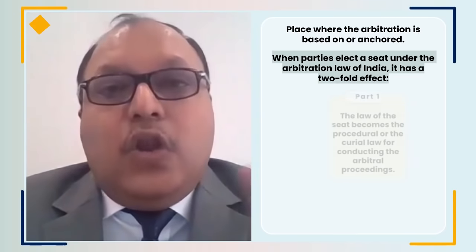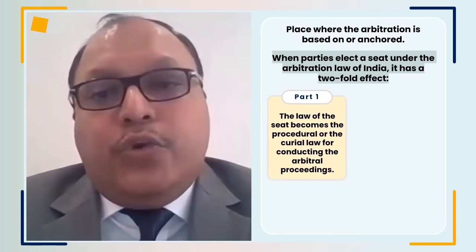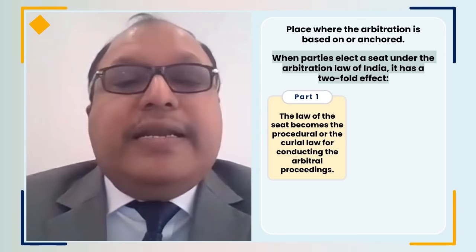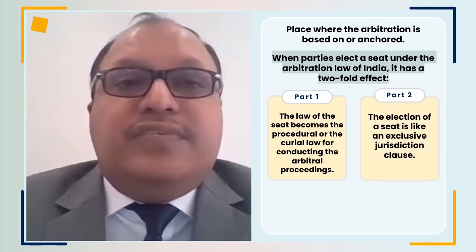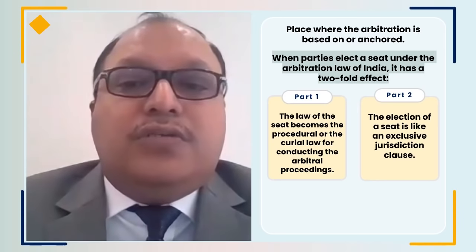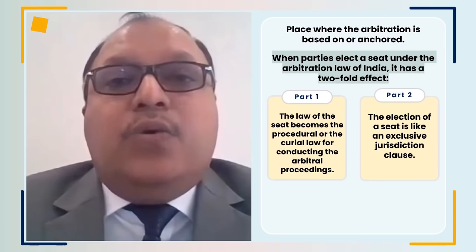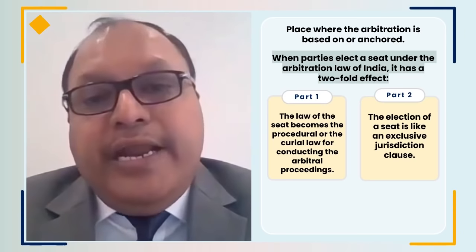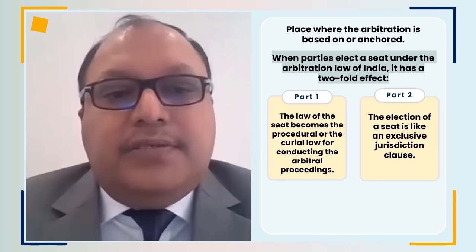First, the law of the seat becomes the procedural or curial law for conducting the arbitral proceedings. Second, the election of a seat is like an exclusive jurisdiction clause — in other words, the courts at the seat alone have jurisdiction to entertain any application or appeal arising from the arbitral proceedings.